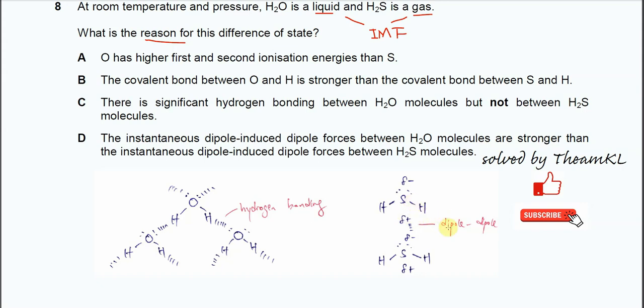For H2S, it just forms permanent dipole forces. It just between the H2S molecules, these molecules can form dipole-dipole forces. Because it's not really polar enough compared to H2O. Because the hydrogen is just bonded to sulfur. Sulfur is less electronegative compared to oxygen. Therefore, between these two molecules, it's just able to form the dipole-dipole, or you can say PDPD.